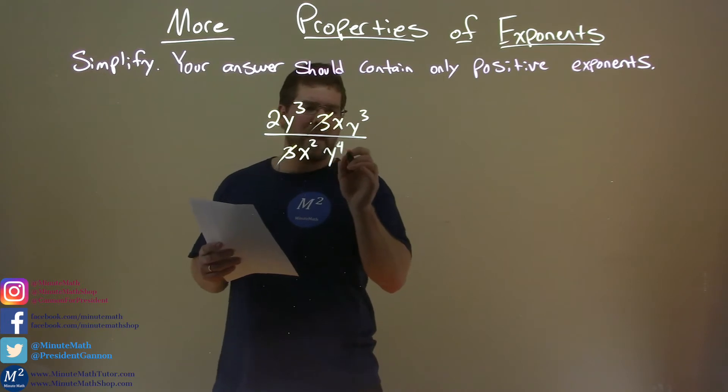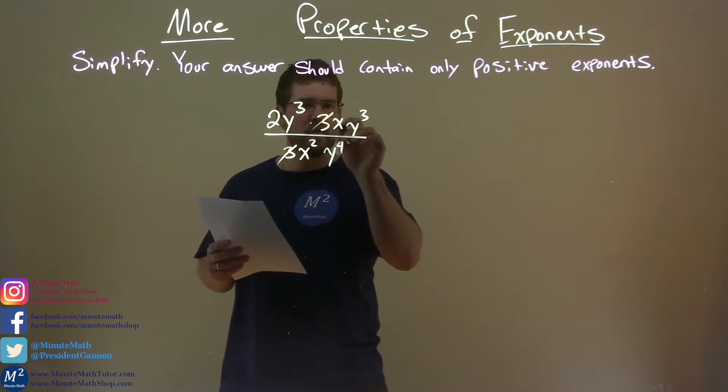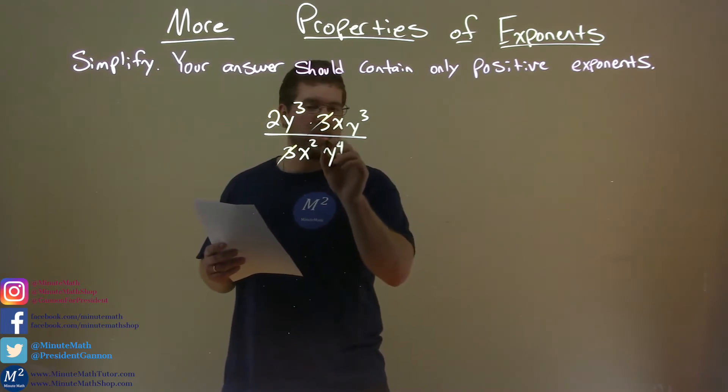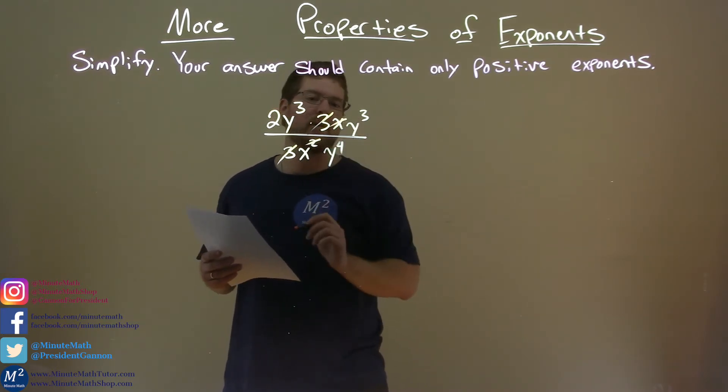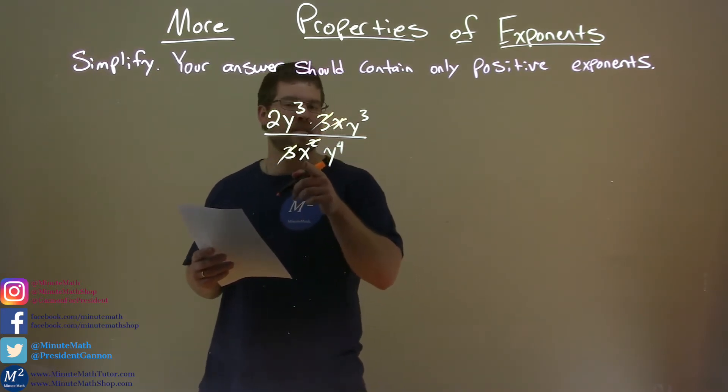Now, let's go with the x's first. We have an x up here in the numerator and 2x's down here. So we can get rid of 1 here and get rid of that 1x up there, and we have x to the first power down here.